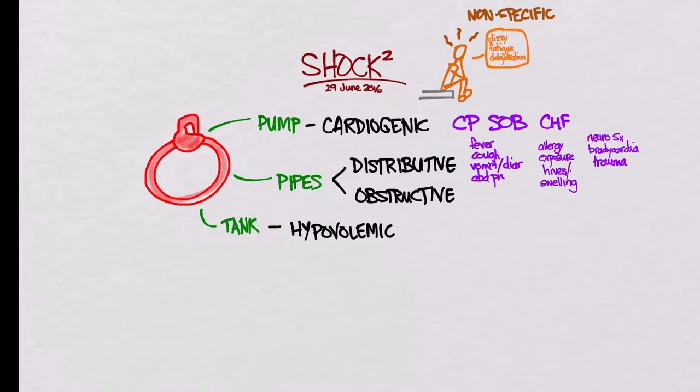Now let's look at obstructive causes. If it's PE, look for PE risk factors. And on physical, you might look for things like a DVT, maybe their SATs are low, maybe they're having trouble breathing. For a tension pneumothorax, you're going to look for your classic triad of JVD, decreased breath sounds on one side, tracheal deviation.